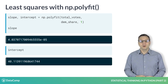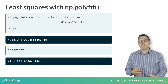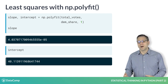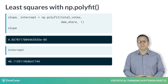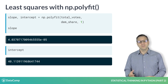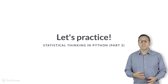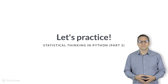The slope tells us that we get about four more percent votes for Obama for every 100,000 additional voters in a county. Now that you know how to perform a linear regression, let's do it with some real data in the exercises.